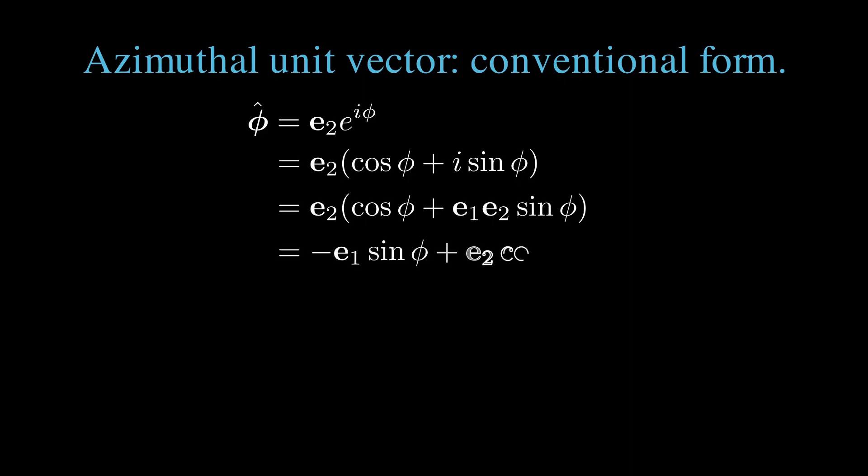Now we expand the azimuthal unit vector from polar form to determine the conventional vector expression. This is the easiest of the three to do. We start with phi hat equals e2 e to the i phi. We write e to the i phi as cos phi plus i sin phi. We put in our explicit form for i, which is e1 e2, and distribute our e2's. We have an e2 cos phi term, and we have an e2 times e1 times e2 term, which is minus e1, leaving minus e1 sin phi plus e2 cos phi.